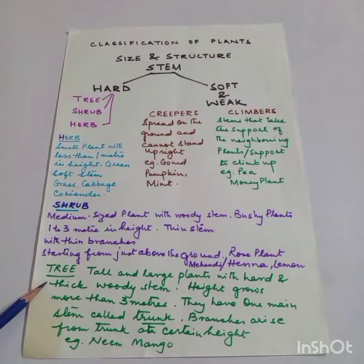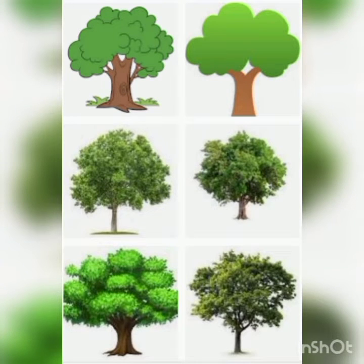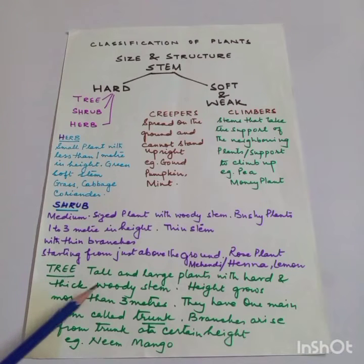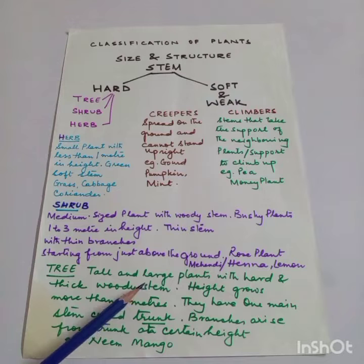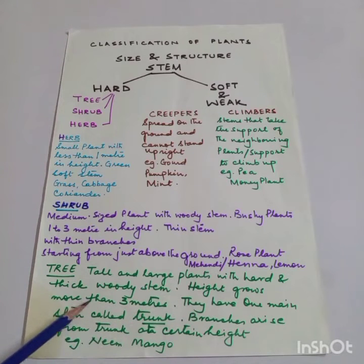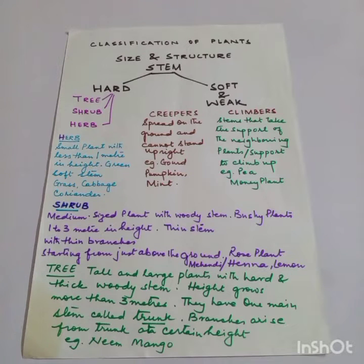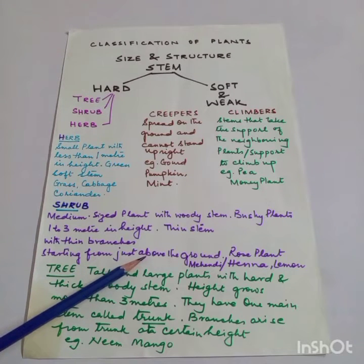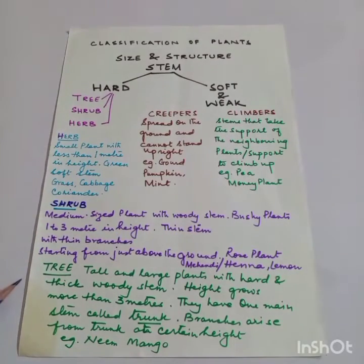Next are trees, which are the largest. Trees are tall and large plants with a hard and thick woody stem. They have a very thick trunk, and their branches also grow — but the branches start growing from a considerable height above the ground.